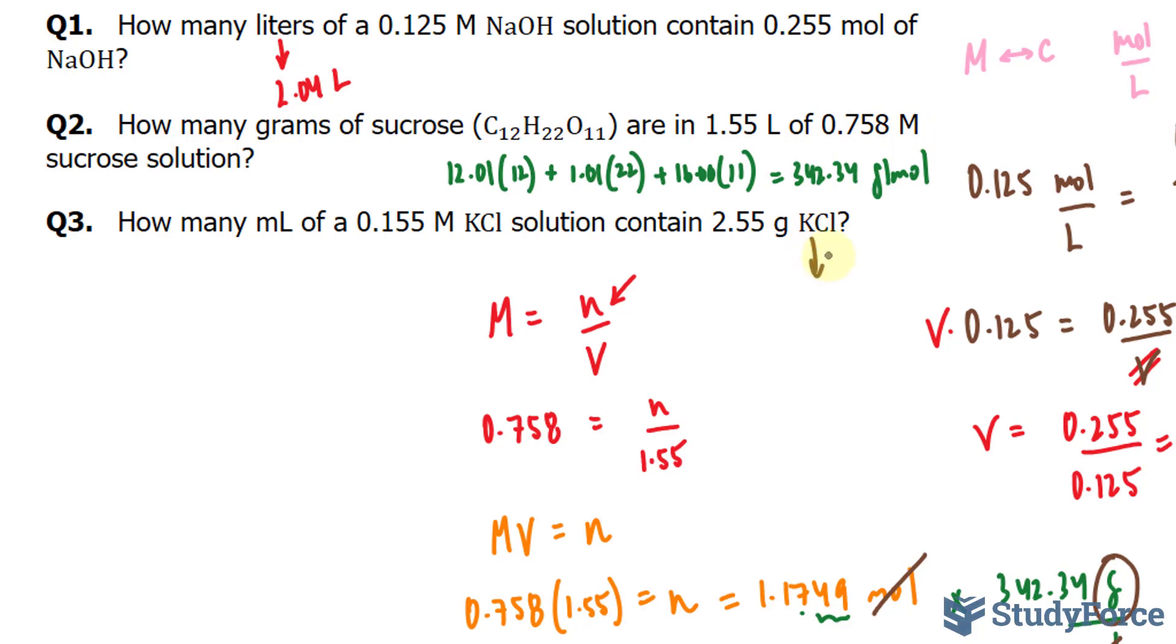So first, we need to find the molar mass of KCl. The molar mass of potassium is 39.09, and the molar mass for chlorine, according to the periodic table, is 35.45.